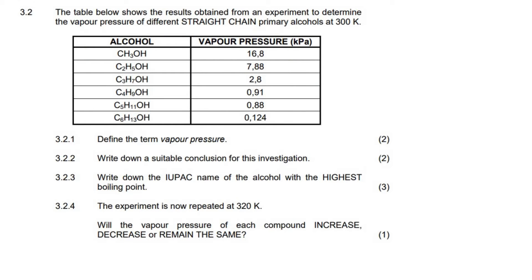The table below shows the results obtained from an experiment to determine the vapor pressure. They're probably going to ask us to define it — they always do that. So, to determine the vapor pressure of different straight chain primary alcohols. There are a few things we can unpack here: we can talk about vapor pressure, we can talk about primary alcohols. Let's just first see as we go, because I'm going to go on a whole bunch of tangents.